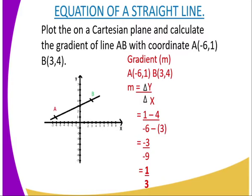The gradient is equal to change in y over change in x. Therefore, taking one coordinate as (3, 4), that is coordinate B, and the other coordinate unknown, that is x and y, you are supposed to say change in y.